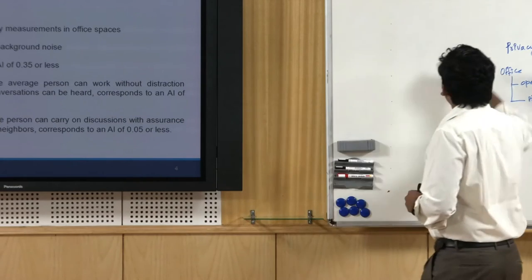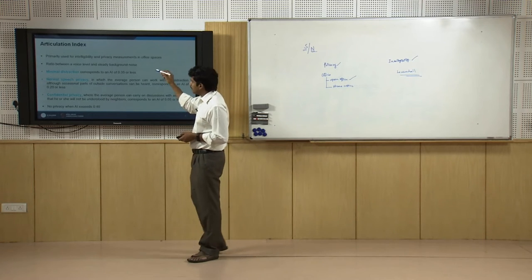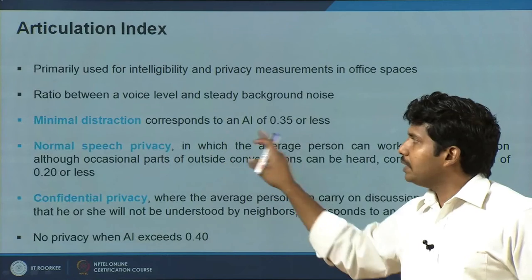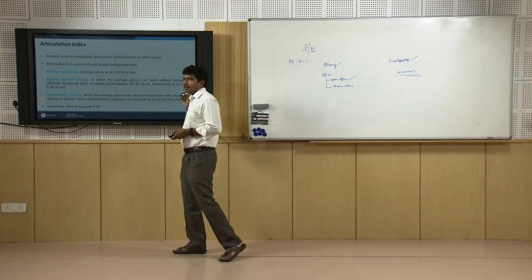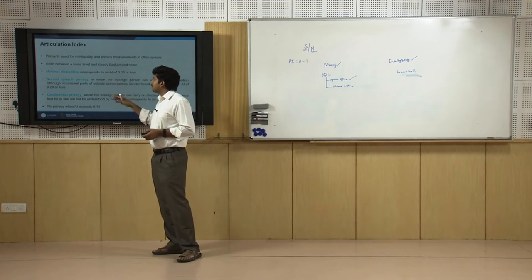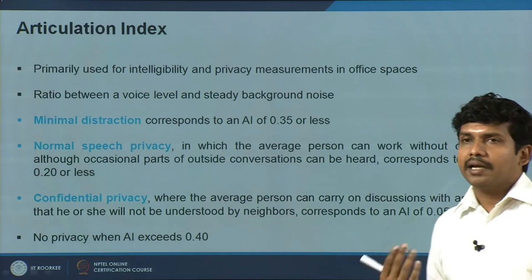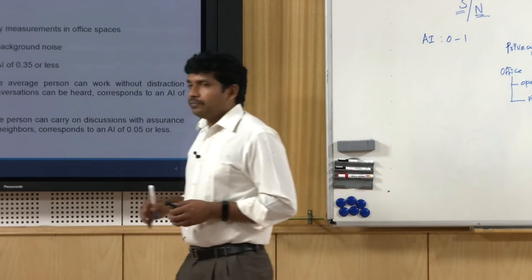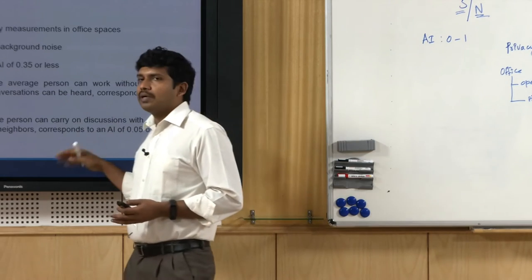More or less, these quality indicators involve a signal-to-noise ratio. Articulation index talks about voice level (the signal) and background noise level (the noise). It ranges from 0 to 1: 1 means perfectly audible, 0 means total inaudibility, which means acoustic privacy. Minimum distraction corresponds to an articulation index of 0.35 or less. If you want confidential privacy — say a boardroom with financial discussions — you might have to go as low as 0.1 or lower. Both acoustic insulation and absorption are required. If the articulation index exceeds 0.4, there is no acoustic privacy.